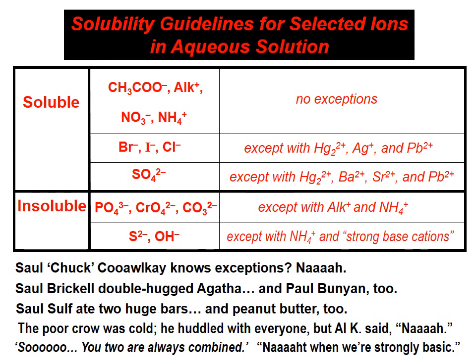They're printed here at the bottom: 'Saul Chuck Kualke knows exceptions? Nah.' 'Saul Brackell double-hugged Agatha and Paul Bunyan, too.' 'Saul Sulf ate two huge bars and peanut butter, too.' 'The poor crow was cold. He huddled with everyone, but Al K said, nah.' 'So, you two are always combined.' 'Not when we're strongly basic.'